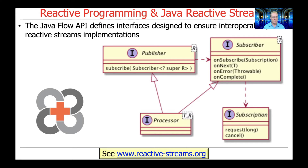We have something called a subscription, which is related to the subscriber. And then finally, we have something called a processor, which is both a publisher and a subscriber. Many of the operators provided in Reactive Streams frameworks are essentially processors — they take data from one publisher, do something to it, and then push it on to some subscriber down the stream.